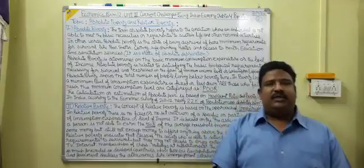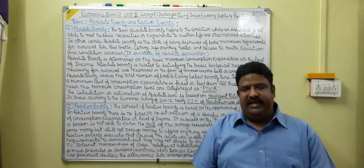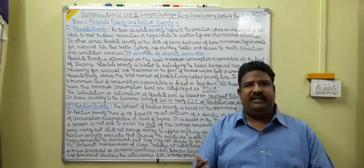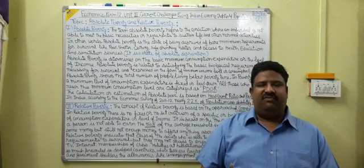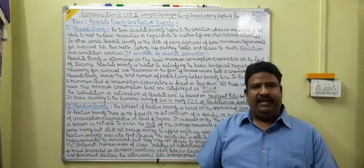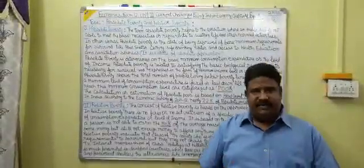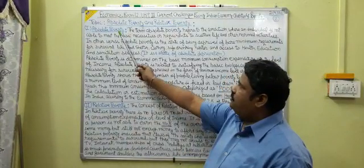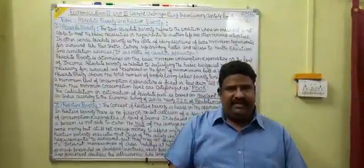These are the two types of poverty. According to developing countries, least developed countries, and developed countries, there are different ways of considering the concept of poverty. In least developed countries and developing countries, the concept of absolute poverty is much prevailing, while in developed countries the concept of relative poverty is prevailing.